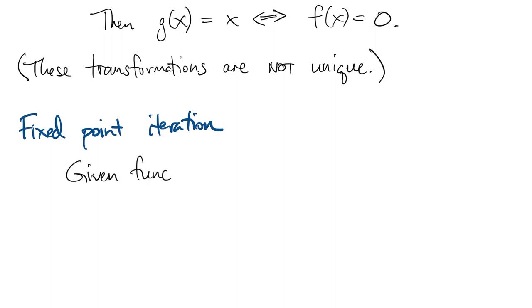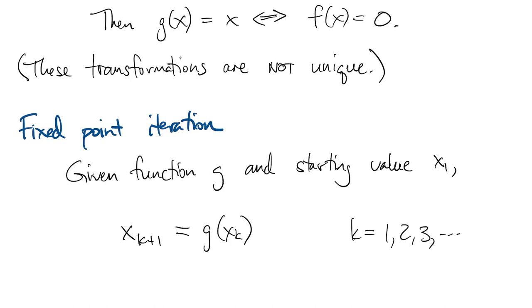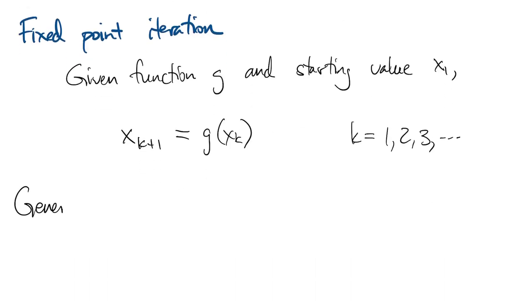So the fixed point iteration is a simple way to try to solve the fixed point problem. You're given a function and a starting value x1, and you simply define the next value of x as the value of g at the current value of x. So we can use this to generate a sequence x1, x2, and so on.